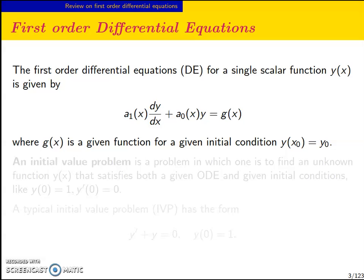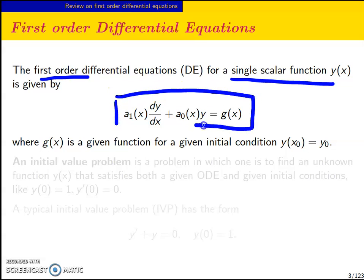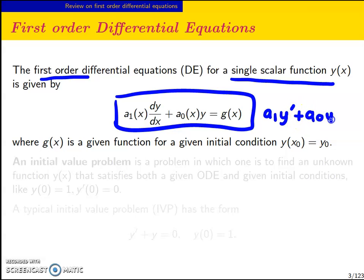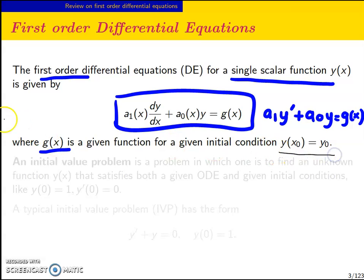So let's look at first order differential equations. The first order differential equation for a single scalar function is given as this. I can write this as a1y' plus a0y equals to g(x). The derivative here decreases as your coefficient decreases. g(x) here is a given function for the initial condition y(x0) equals to y0.